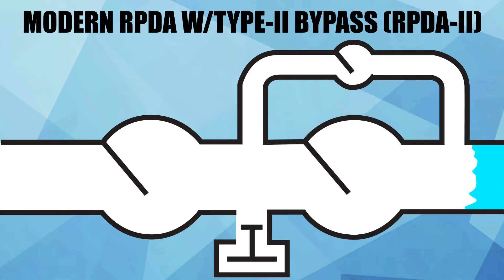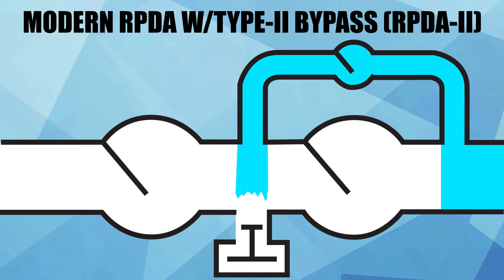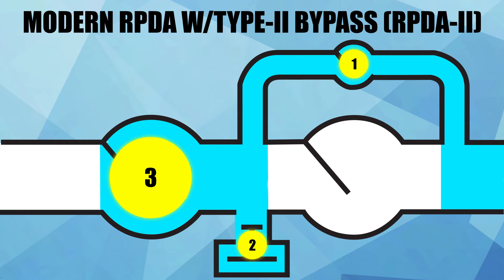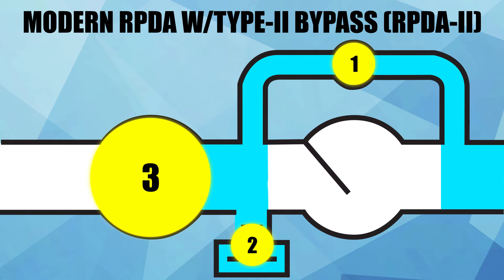During a backflow condition on a modern RPDA with a Type 2 bypass, the water first encounters the bypass single check. Next, the water encounters the main valve relief valve. And then the water encounters the main valve first check. This also provides three mechanisms of backflow protection.